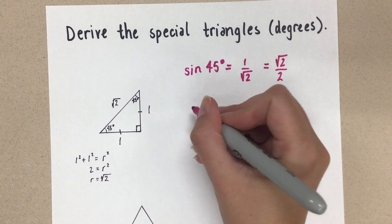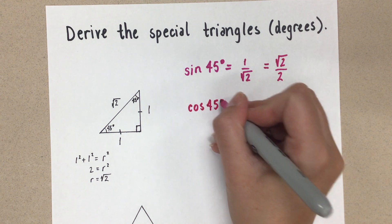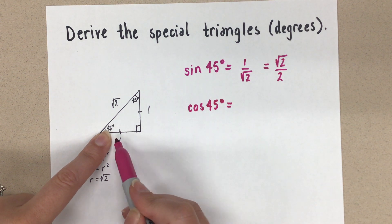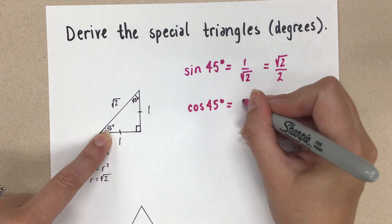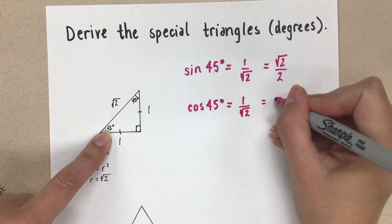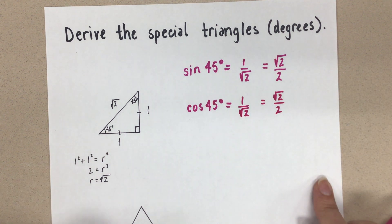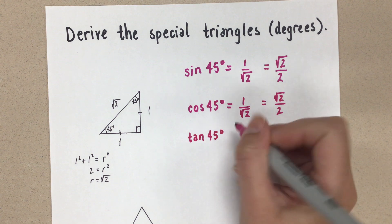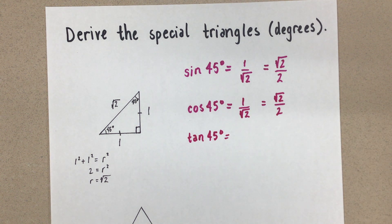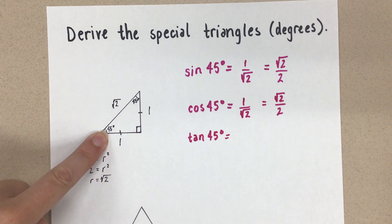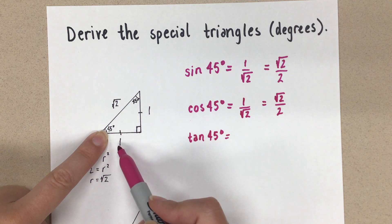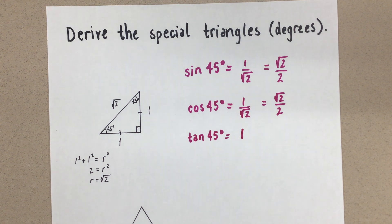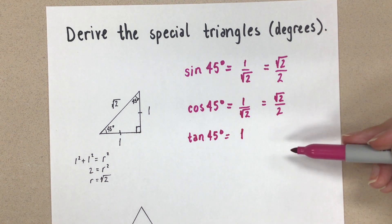For cosine of 45 degrees, cosine is adjacent over hypotenuse. The adjacent side is one and the hypotenuse is root two, so cosine of 45 degrees equals one over root two, which is also root two over two. For tangent of 45 degrees, tangent is opposite over adjacent. Opposite is one and adjacent is one, so tangent of 45 degrees equals one over one, which equals one. No need to use a calculator at all, because we're getting exact values. That's the special triangle for 45 degrees.